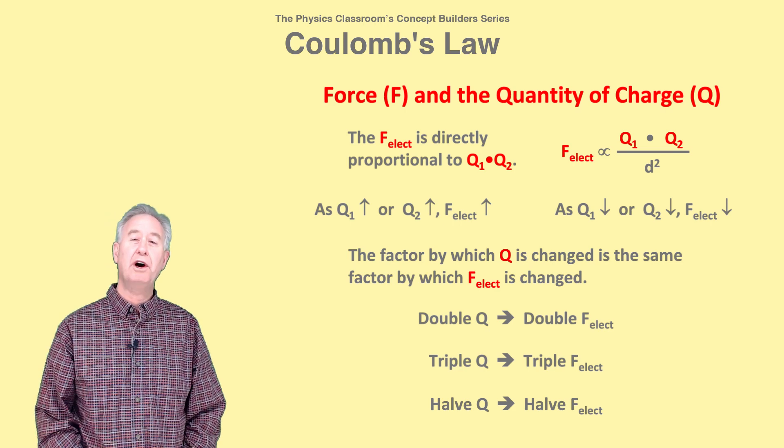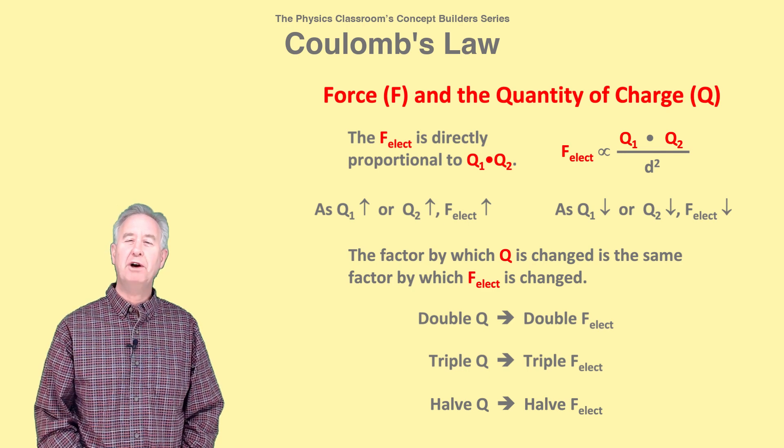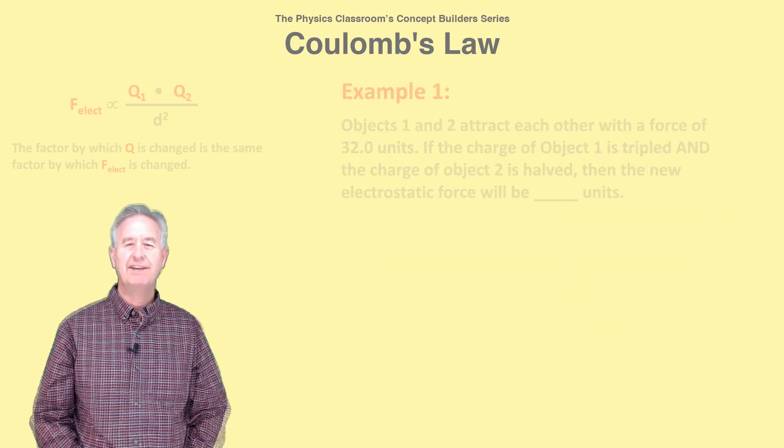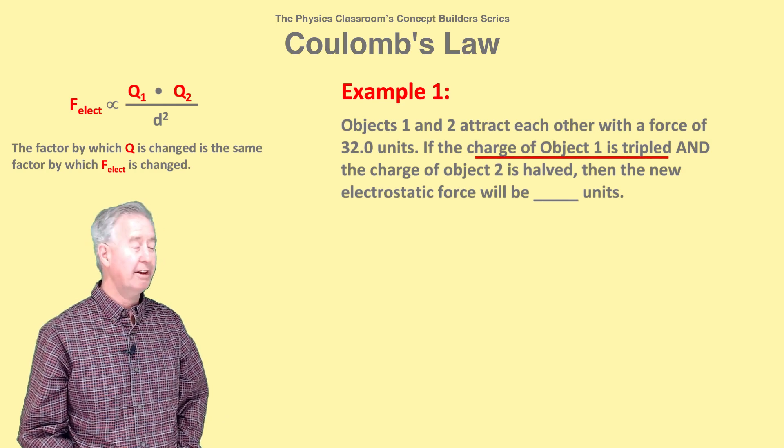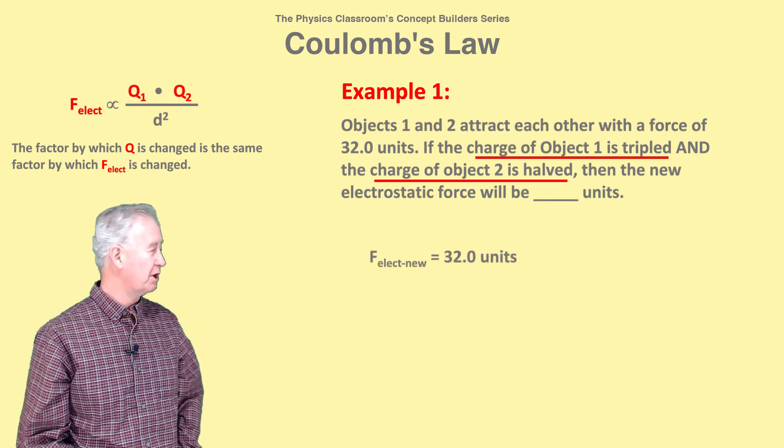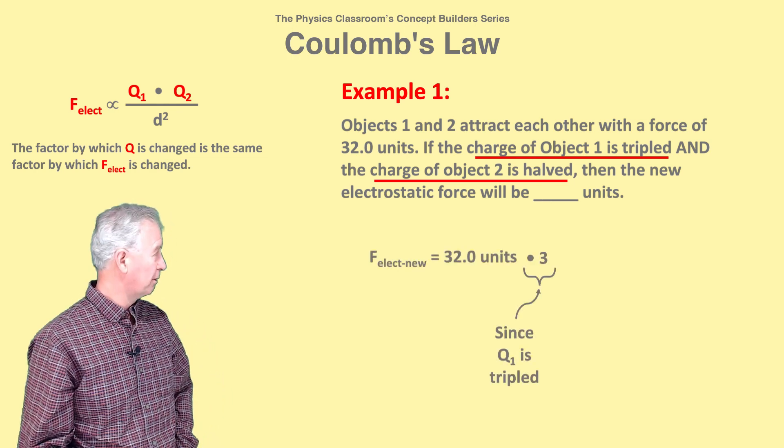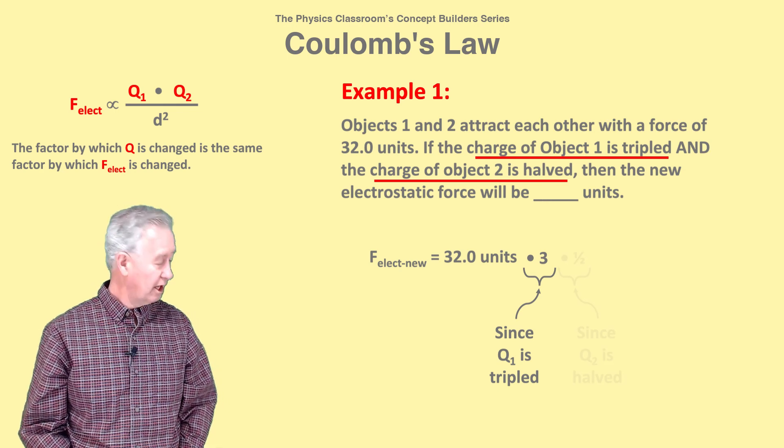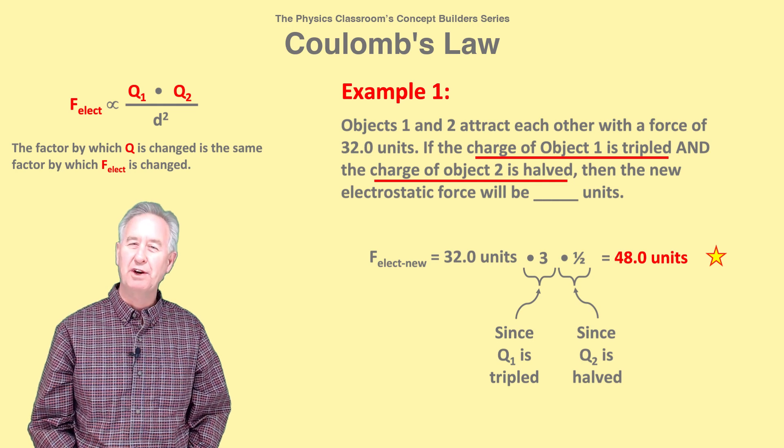If both Q1 and Q2 are changed, then F must be changed twice, once for each Q change. In example 1, the Q1 value is tripled and the Q2 value is halved. To determine the new force, take the original force of 32 units and triple it for the Q1 change and half it for the Q2 change. The new force is 48 units.